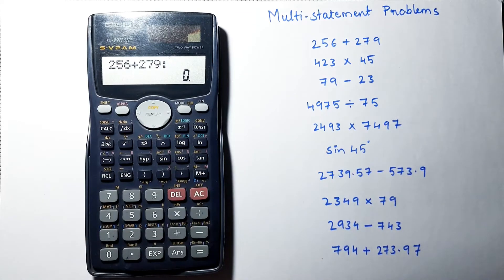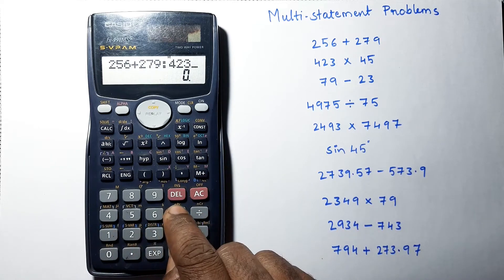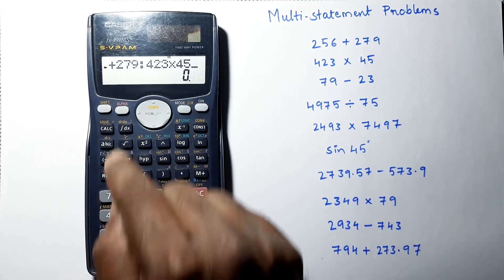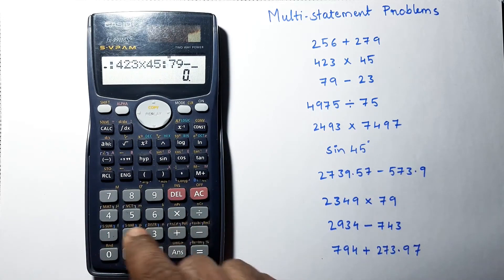Colon, 79 minus 23, colon, 4975 divided by 75.